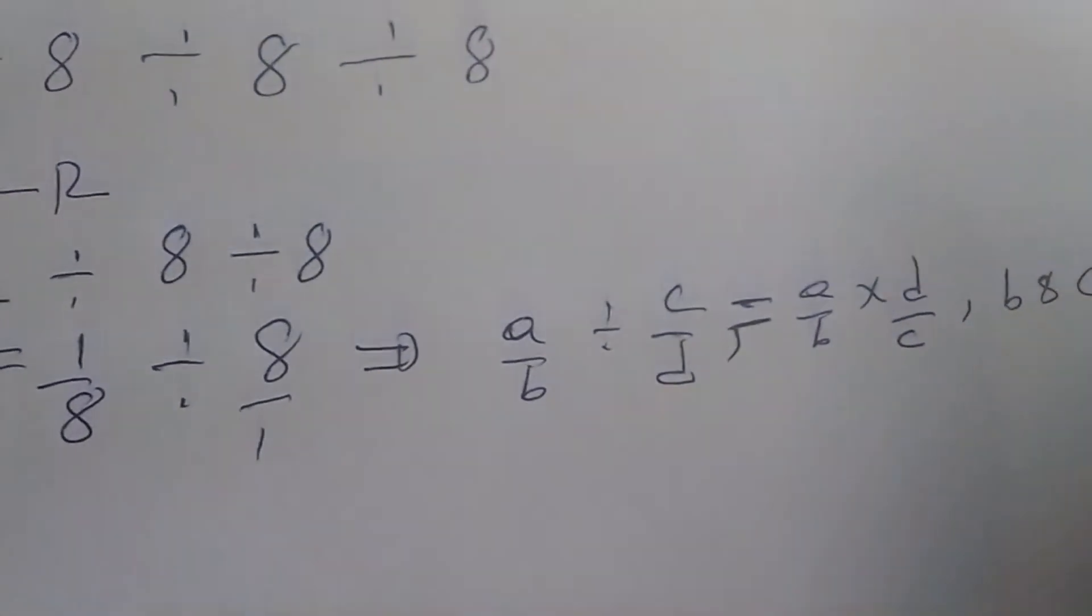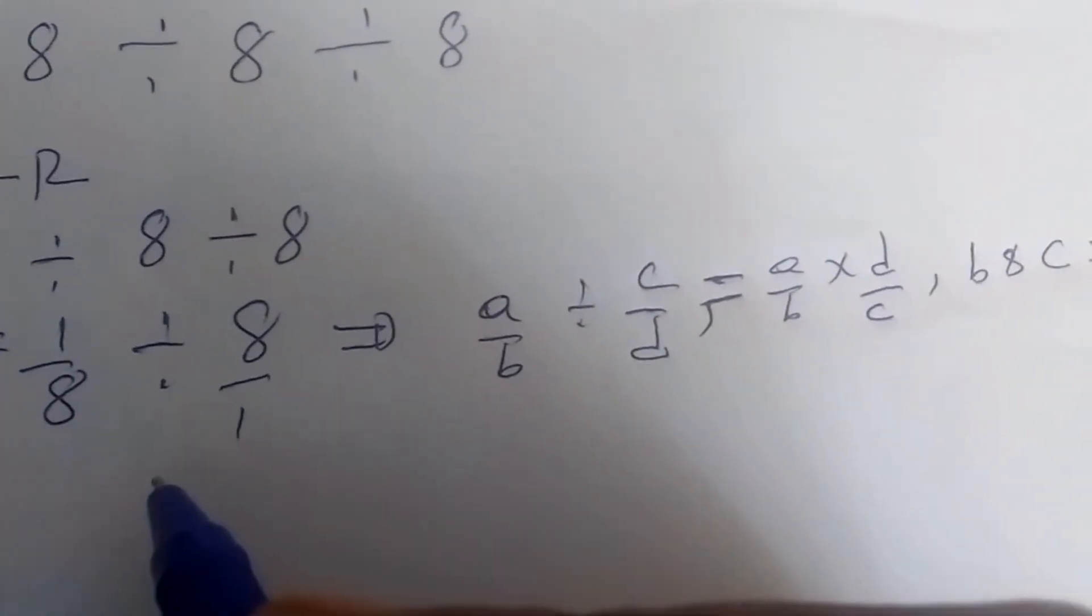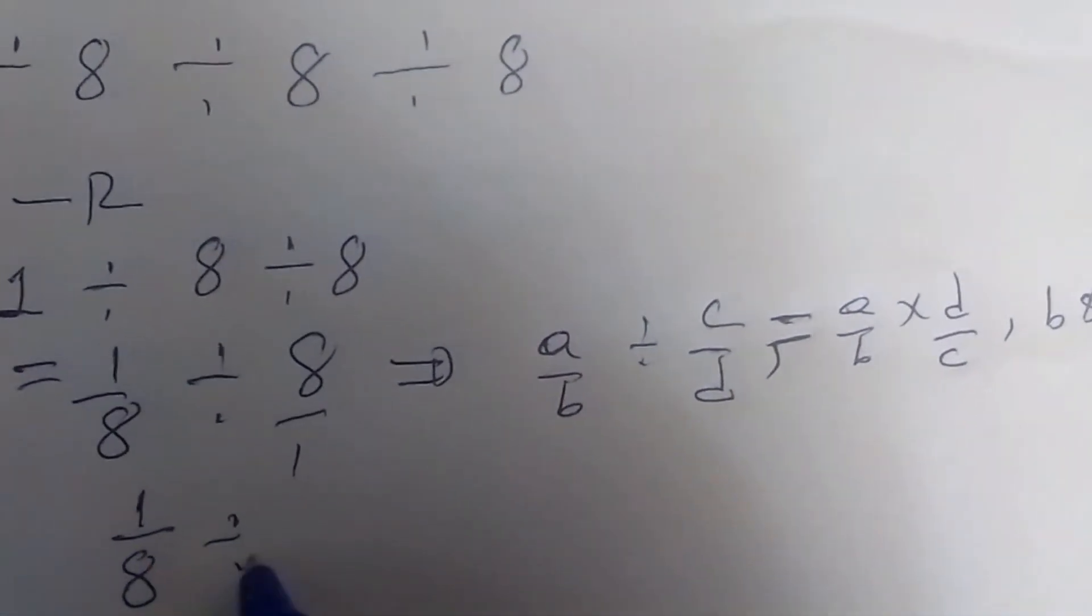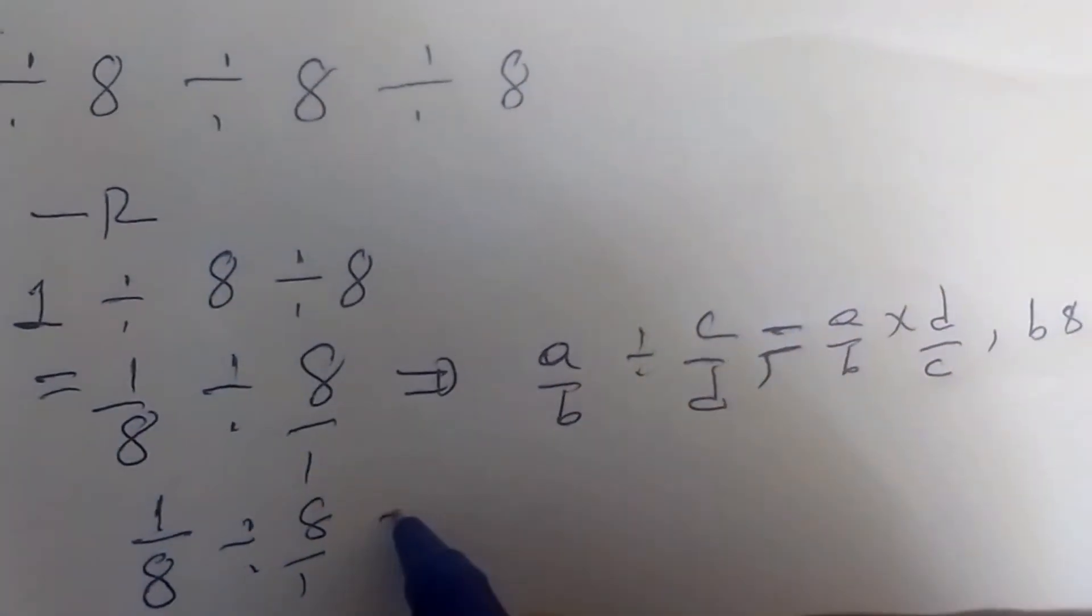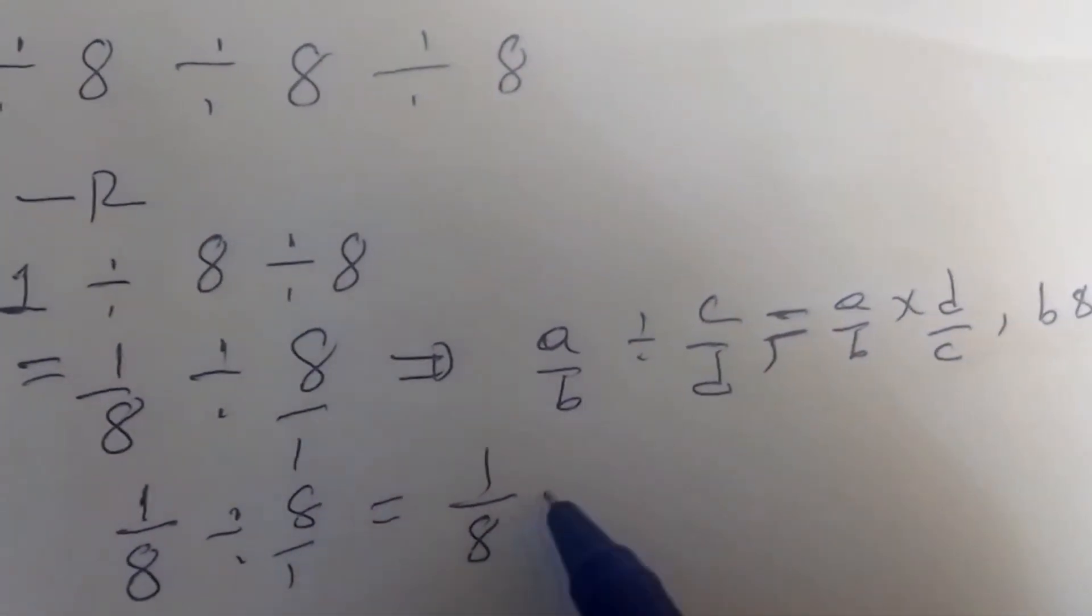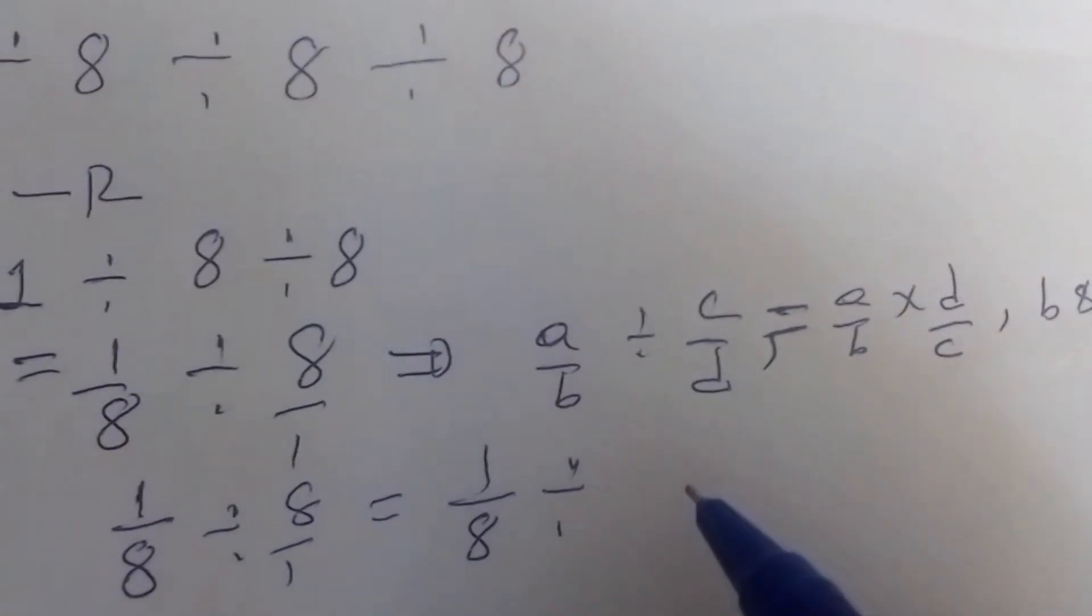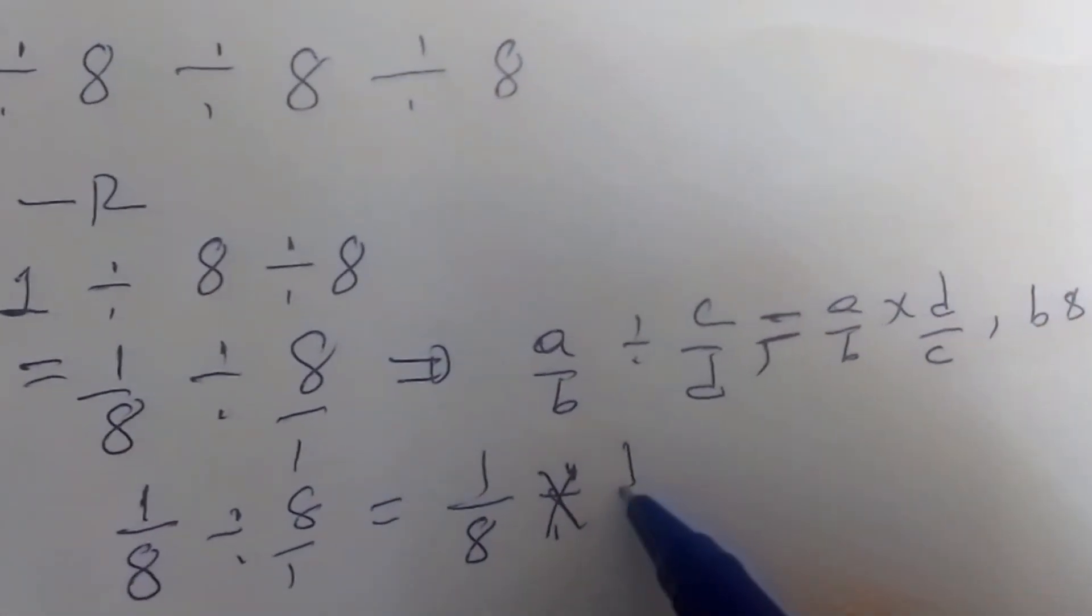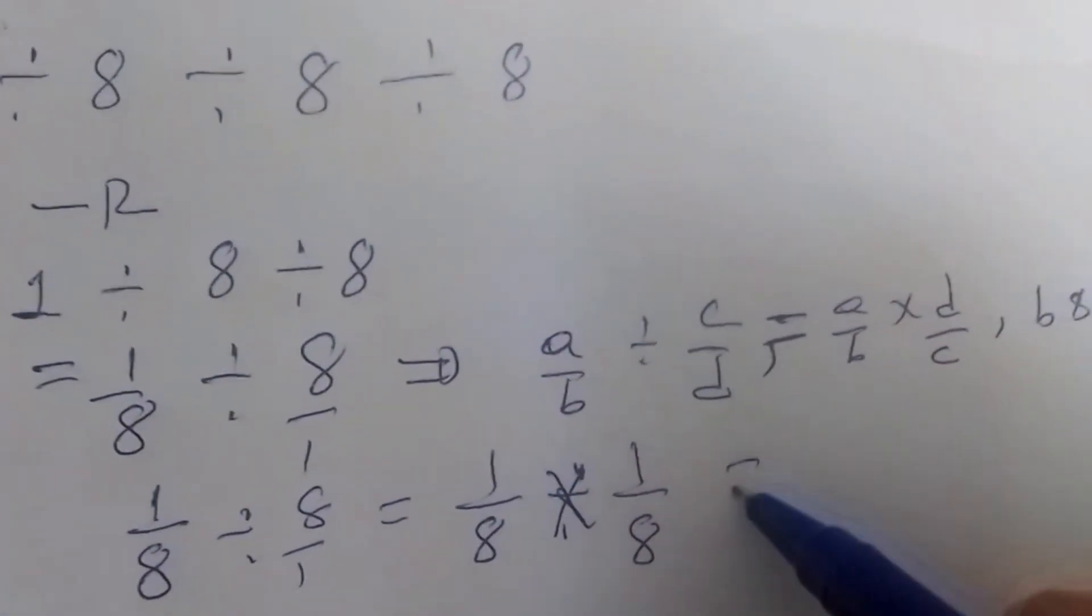Using this rule, 1 over 8 divided by 8 over 1 is the same as 1 over 8 times 1 over 8. This is the same as 1 over 64.